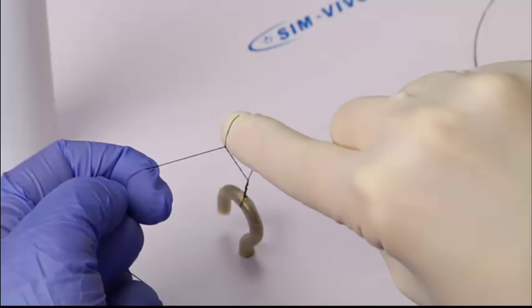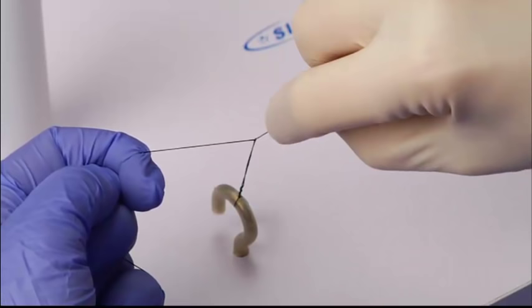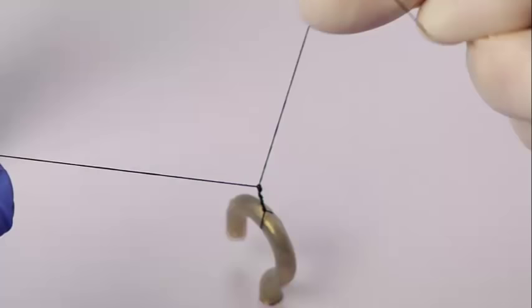This requires some coordination between the fingers holding the end of the strand and the index finger to maintain tension and release the strand at the appropriate time. Once the free end is through the loop, it is re-grasped and the throw is brought down flat by rotating your hands slightly.